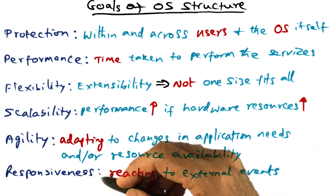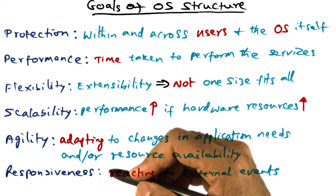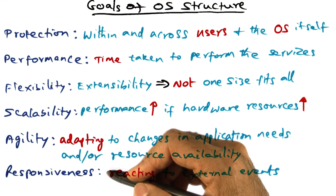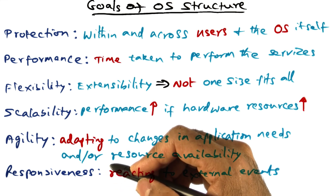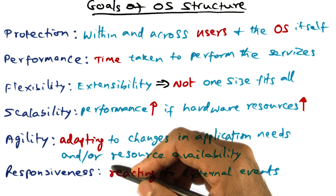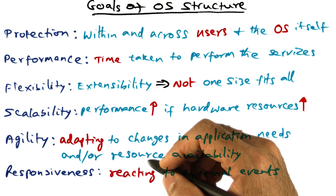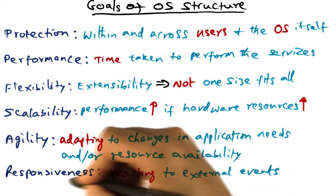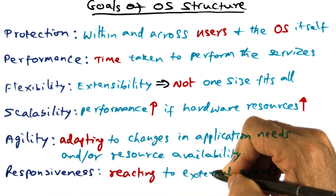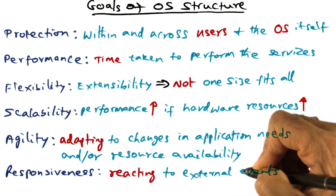Responsiveness is particularly important for applications that are interactive in nature. Imagine you're playing a video game — when you click the mouse to shoot at a target, you want to see action immediately on the screen. So that is responsiveness: how quickly the operating system is reacting to external events.